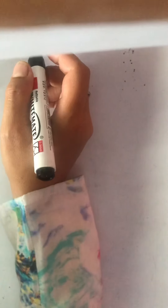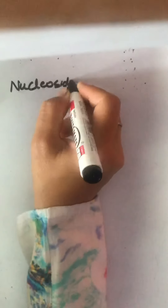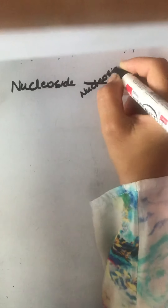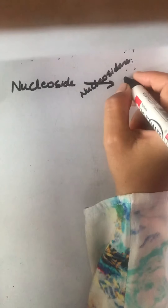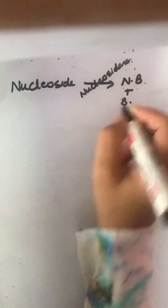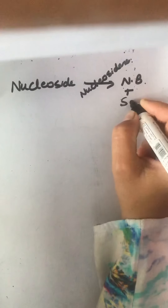The intestinal juice contains nucleosidases, so this nucleoside is acted upon by nucleosidase and converted to the nitrogenous base along with a pentose sugar. This completes the digestion of nucleic acids.